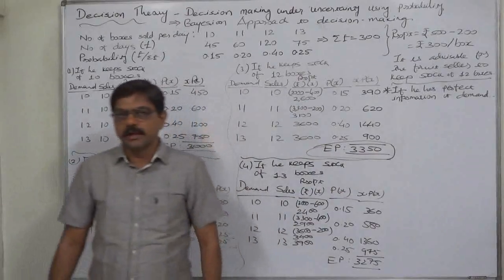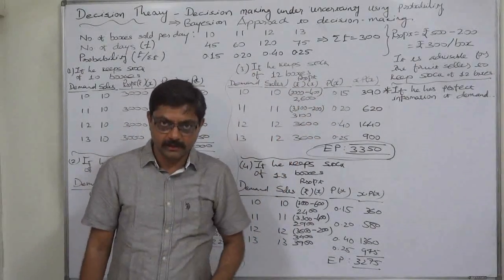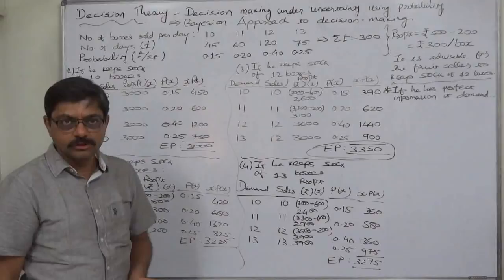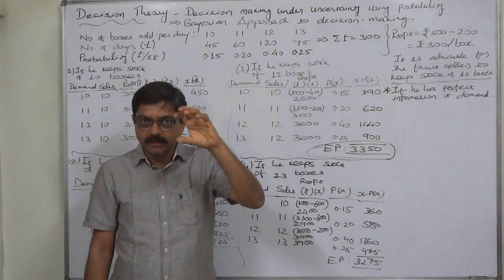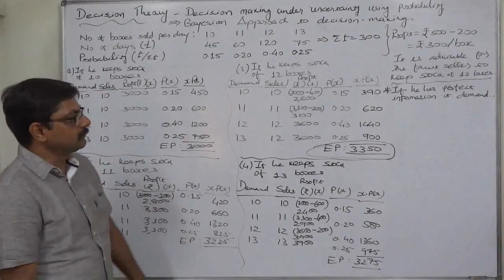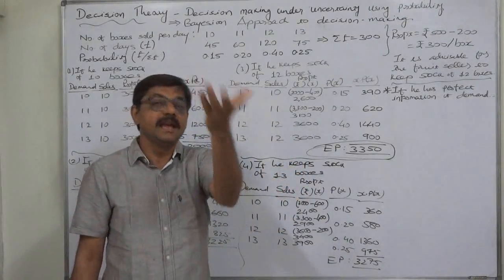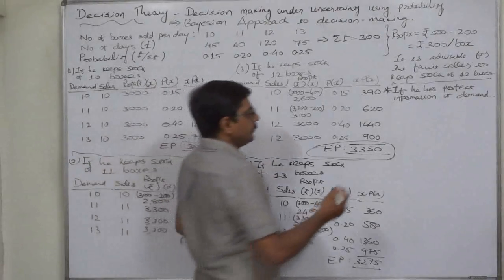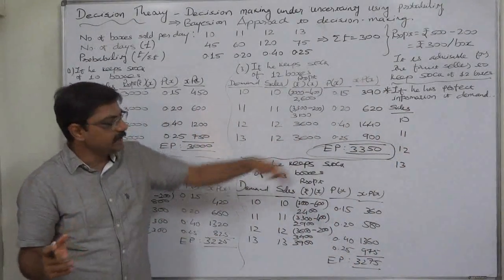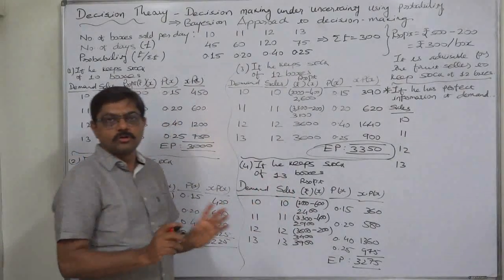Now, if the fruit seller wants to have perfect information every time by purchasing from the wholesaler or supplier, that is not possible free of cost — he has to bear some cost. What should be the amount he should be ready to pay for getting perfect information? First, let's calculate the expected profit per day if he has perfect information every time. His sales will be either 10, 11, 12, or 13 boxes, known well in advance, so he will keep only that stock and there will be no loss on unsold boxes.